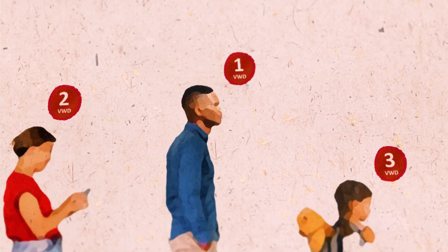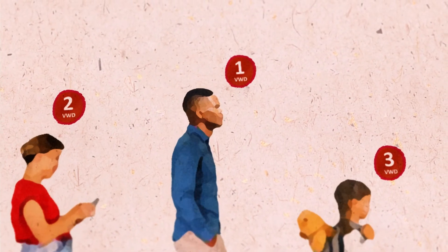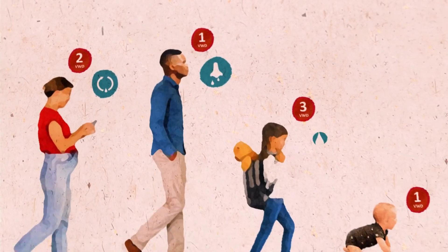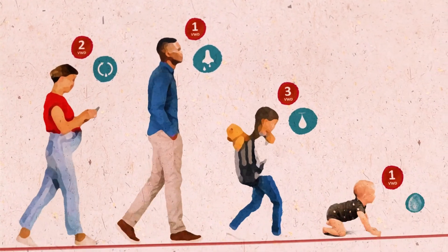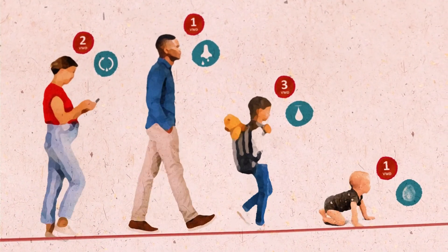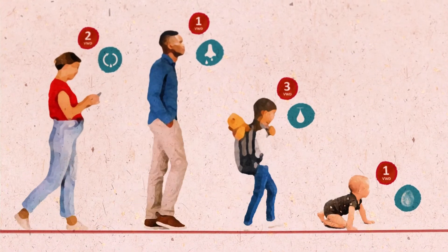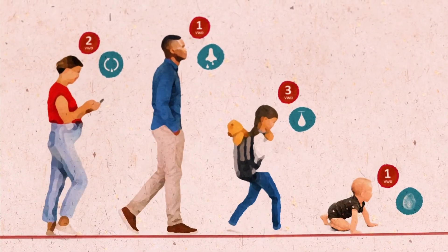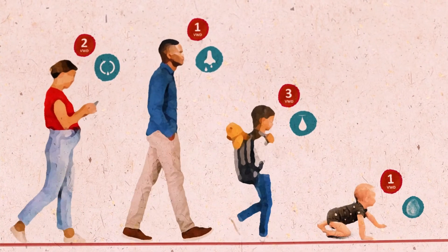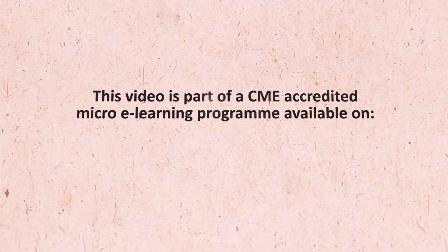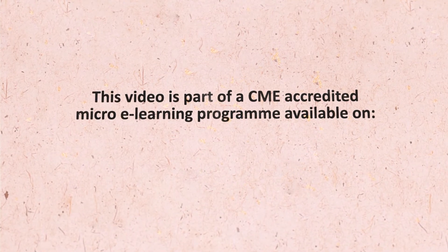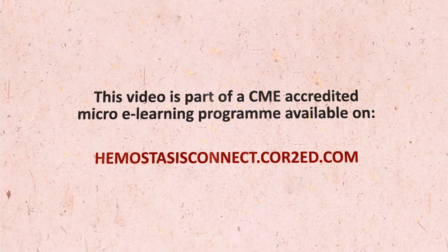Von Willebrand disease is a chronic disorder, so the key is to support patients in living a normal life. Be aware that common symptoms like nosebleeds and heavy menstrual bleeding are treatable, and that a multidisciplinary approach is required to improve patients' quality of life. For more information on the pathophysiology, symptoms, and management of von Willebrand disease and its impact on other care, please refer to the full microlearning program on core2ed.com.